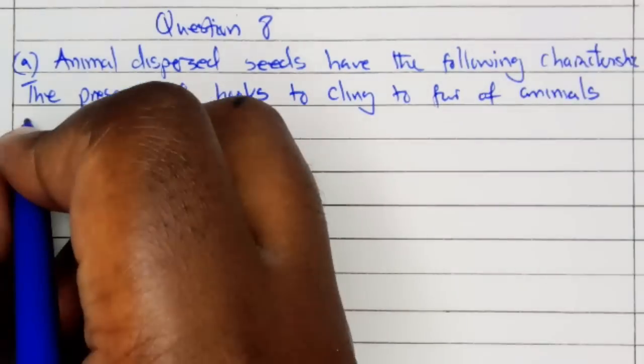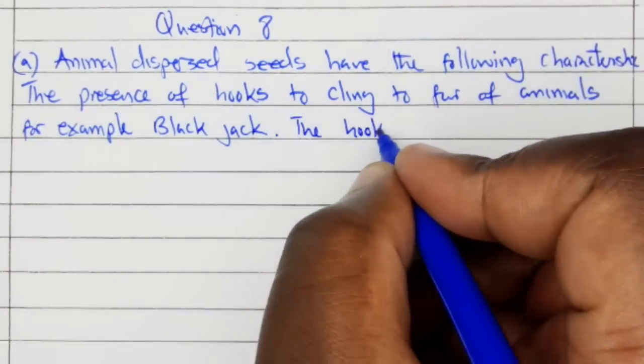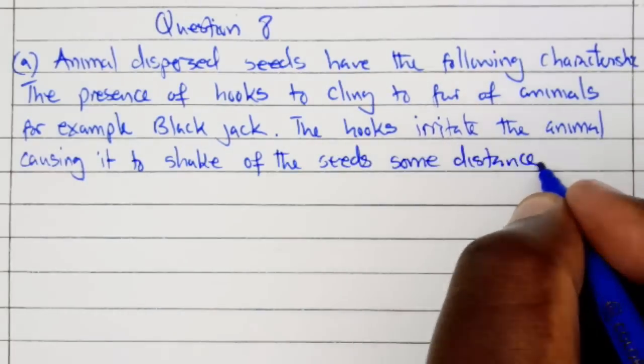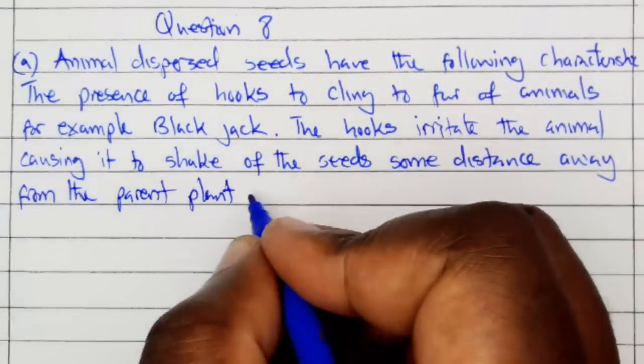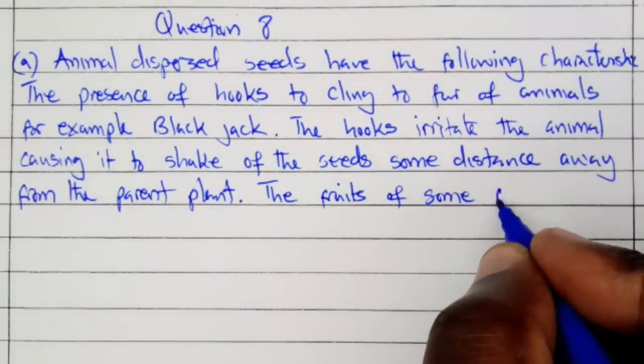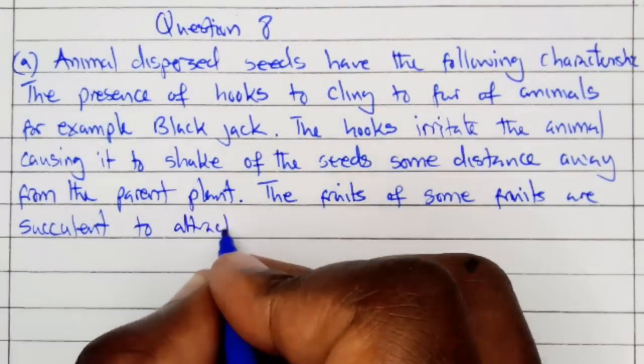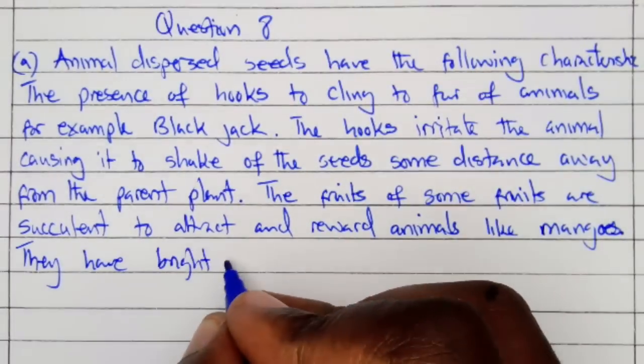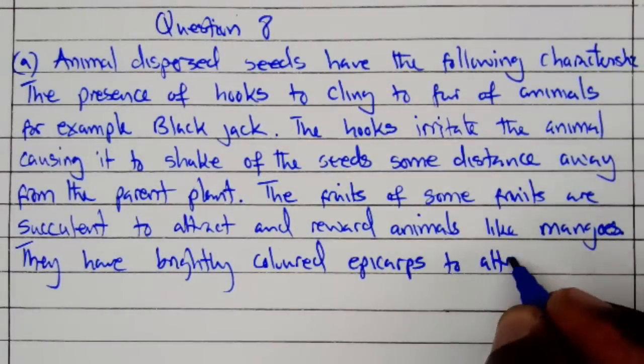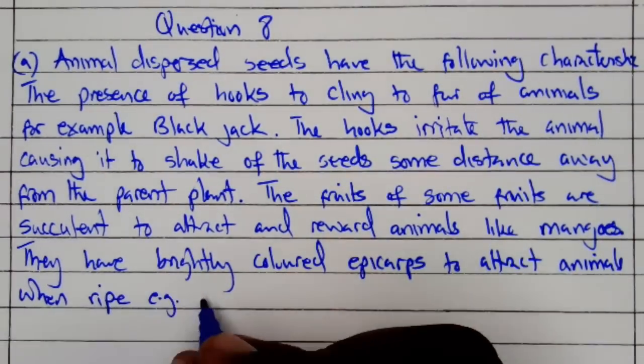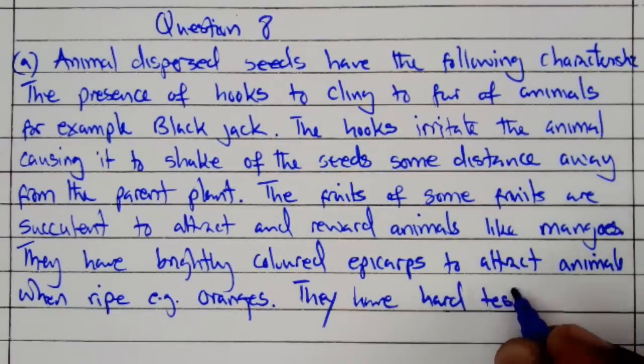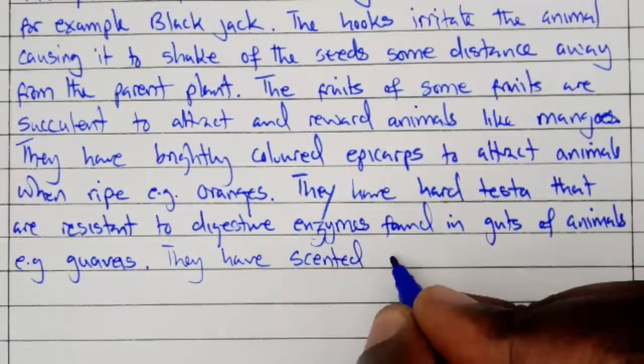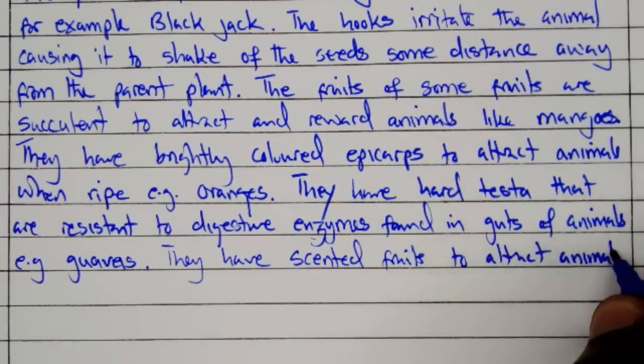Question 8A: Animal dispersed seeds have the following characteristics. The fruits of some fruits are succulent to attract and reward animals like mangoes. They have brightly colored epicarps to attract animals when ripe, for example, oranges. They have hard testa that are resistant to digestive enzymes found in the guts of animals, for example, guavas. They have scented fruits to attract animals, for example, oranges.